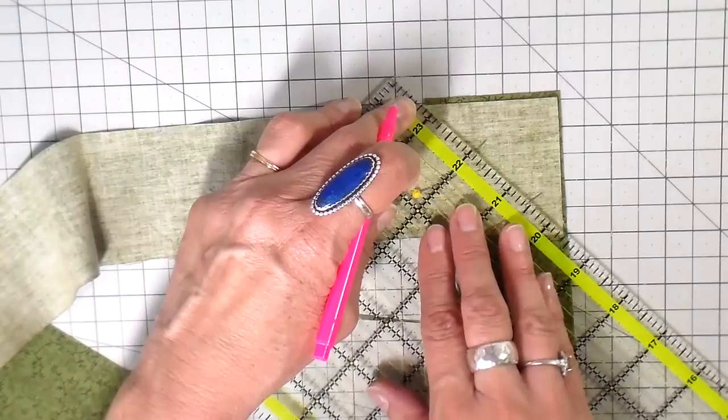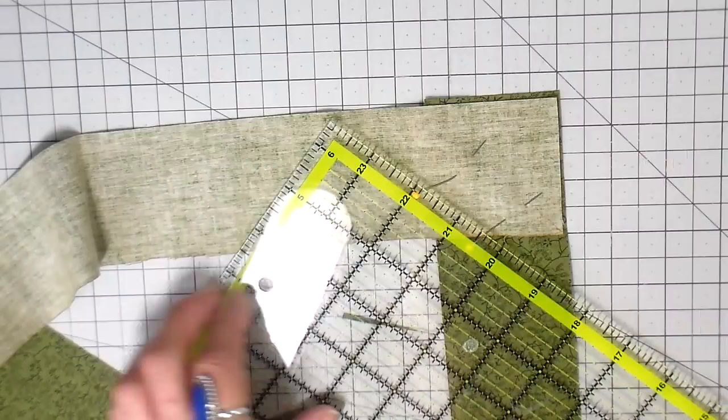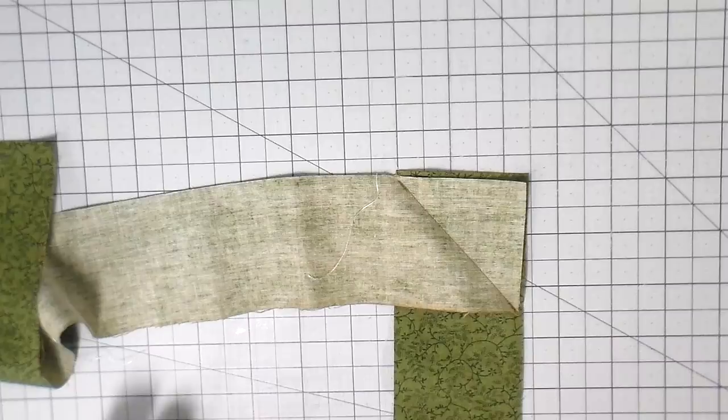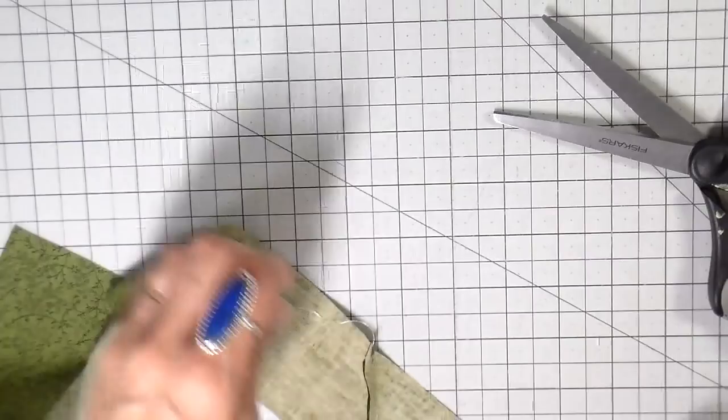And once it's marked then you will sew right on the top of your marked line. You want to cut that down to a quarter of an inch seam allowance and then open that up and lay it flat and press it open.